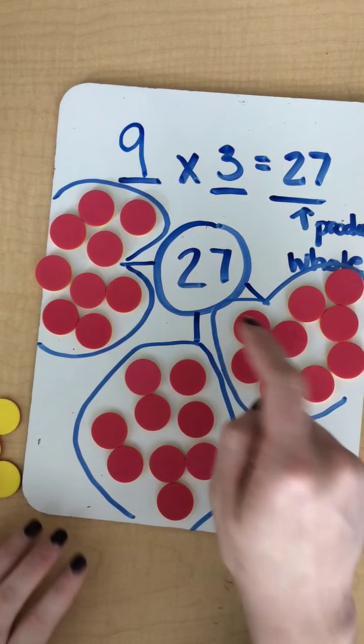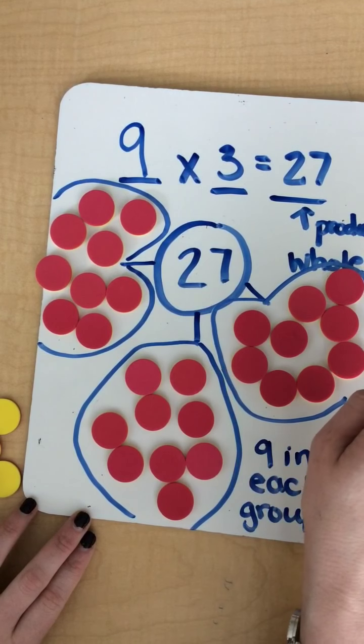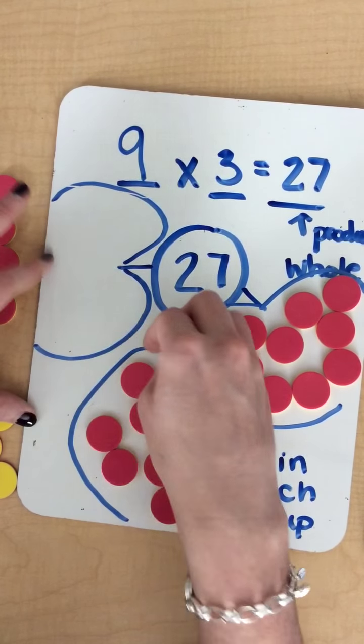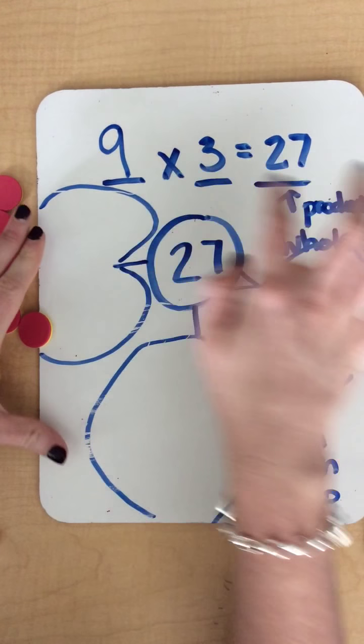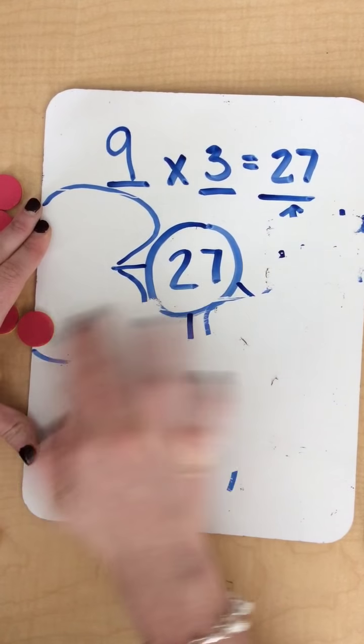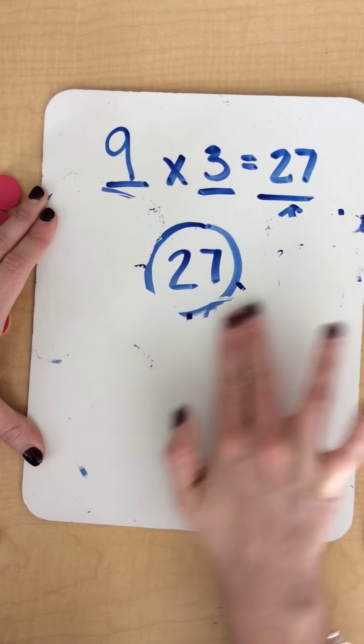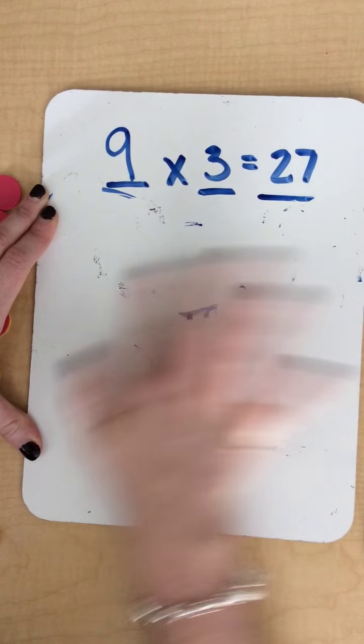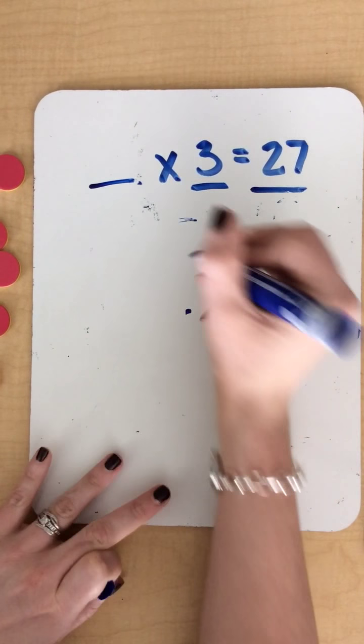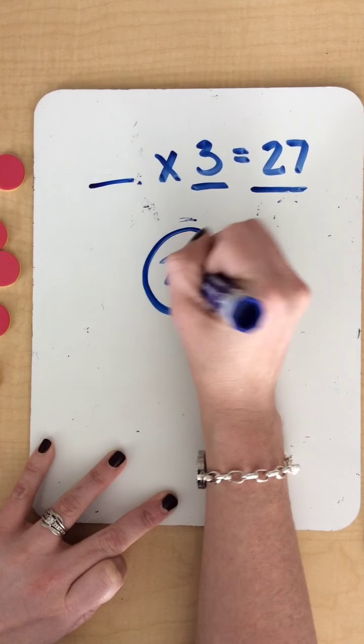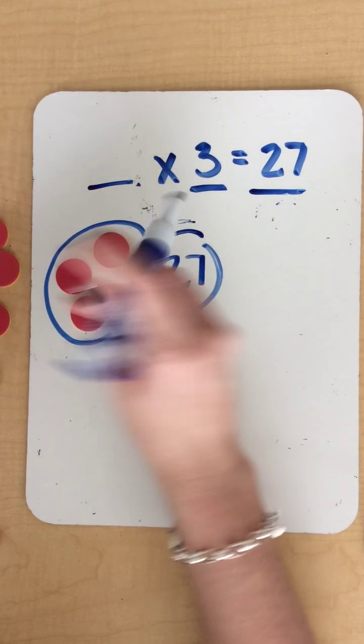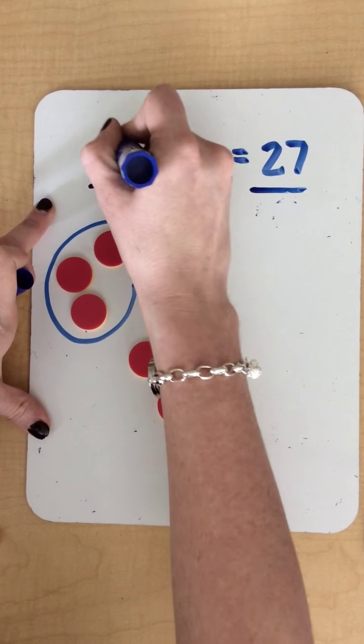I can also do this by putting three in each and figuring out how many groups I make. So I could take these off and follow the same steps. Circle in the middle, 27, and then now I would just put three in each group. One group of three, and I would keep doing groups of three until I reached my nine groups.